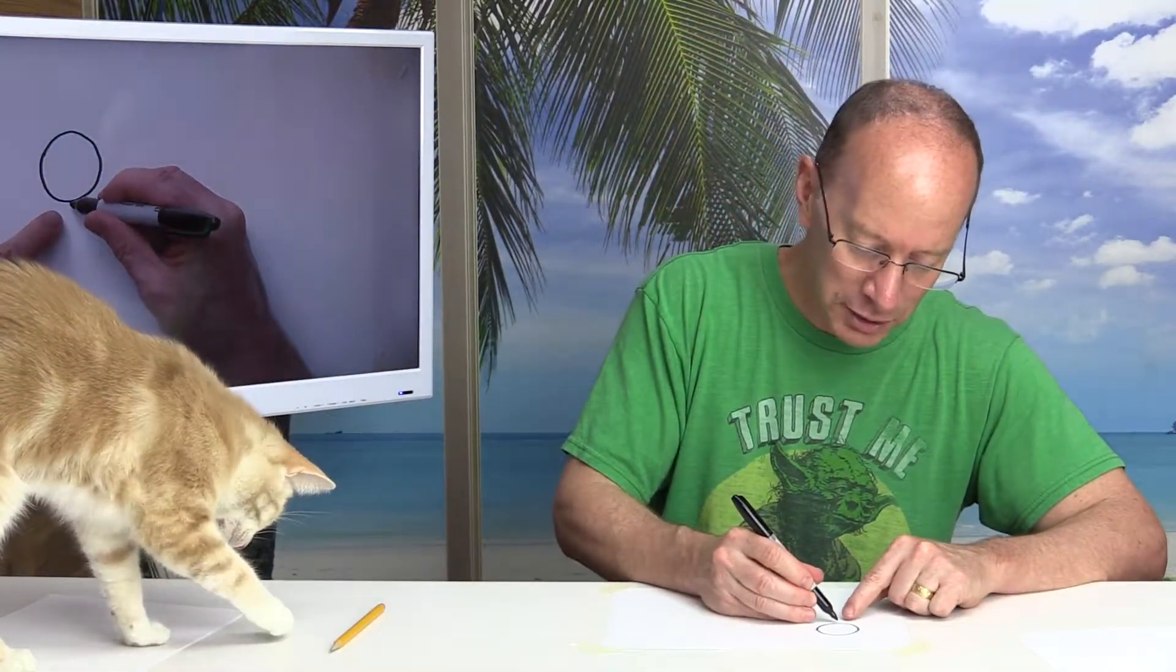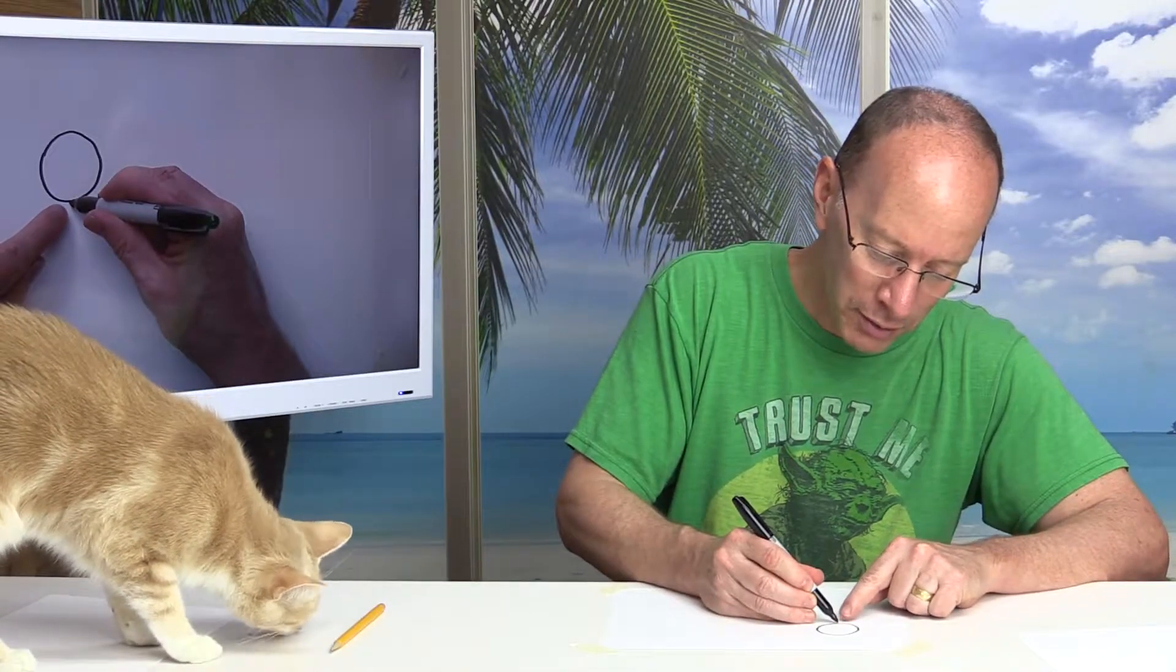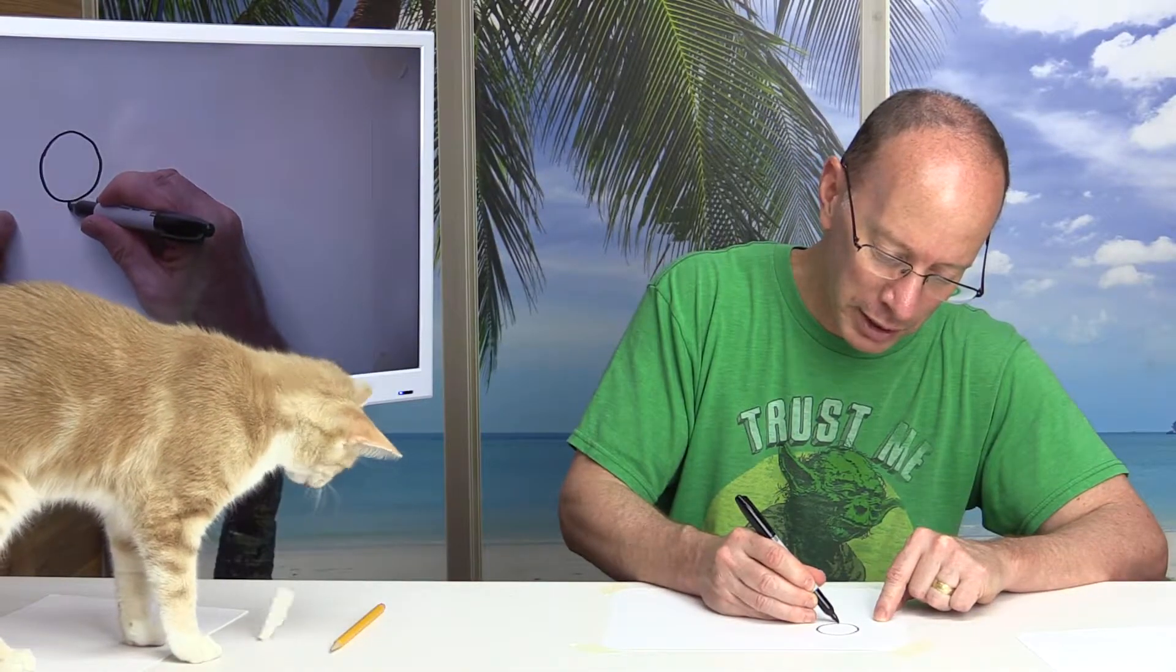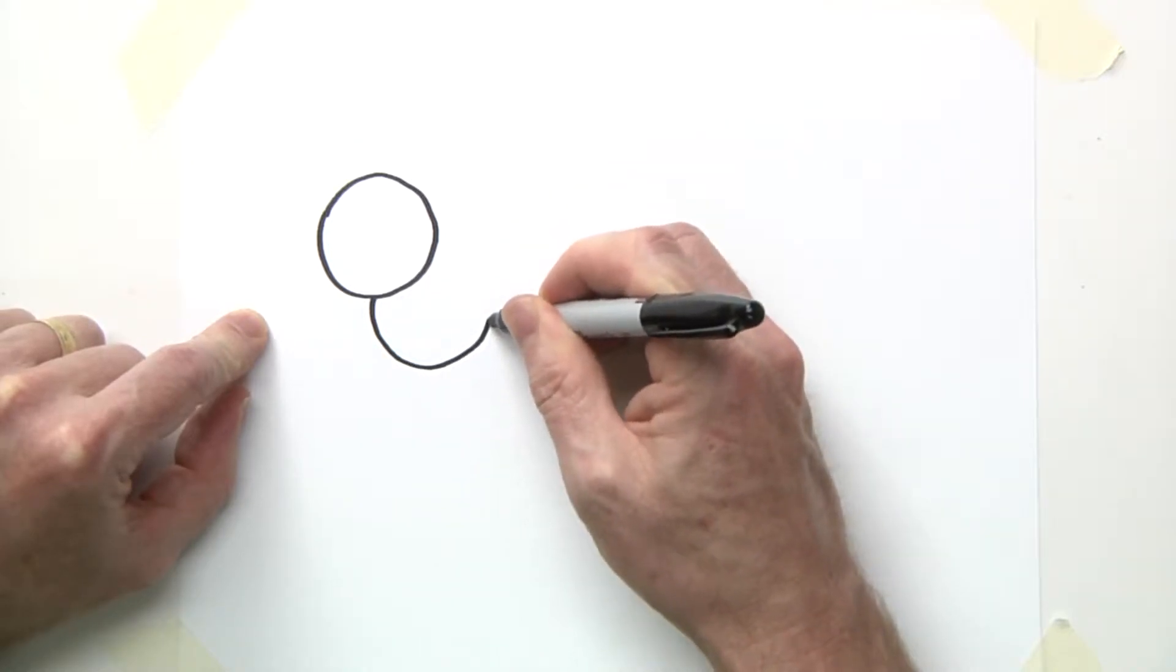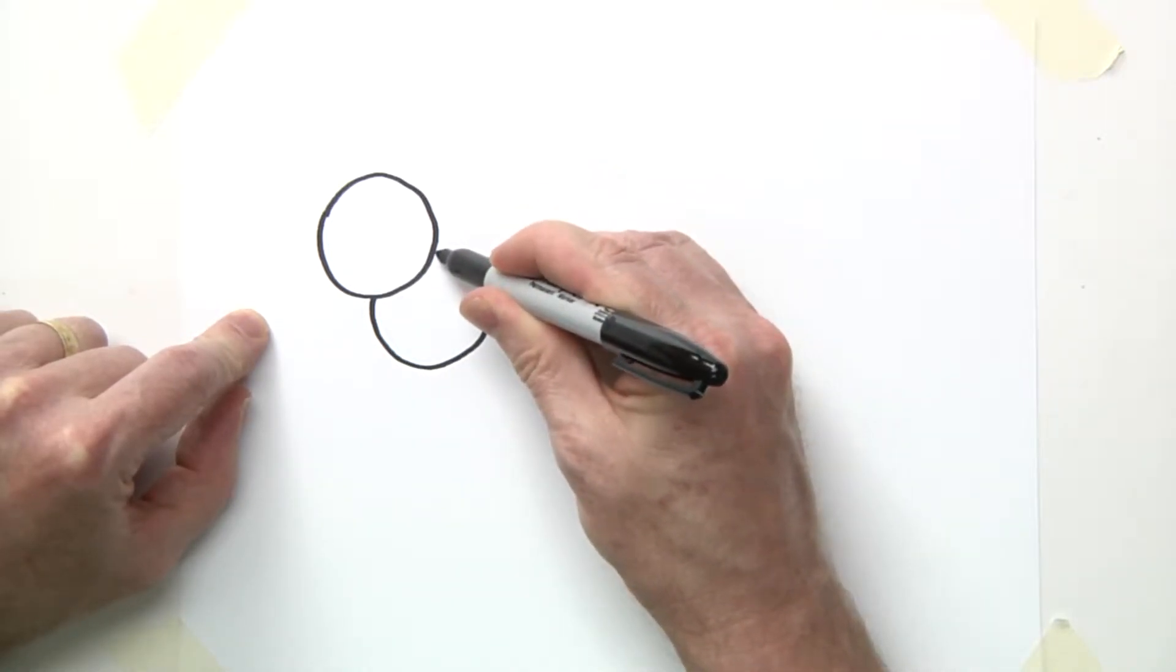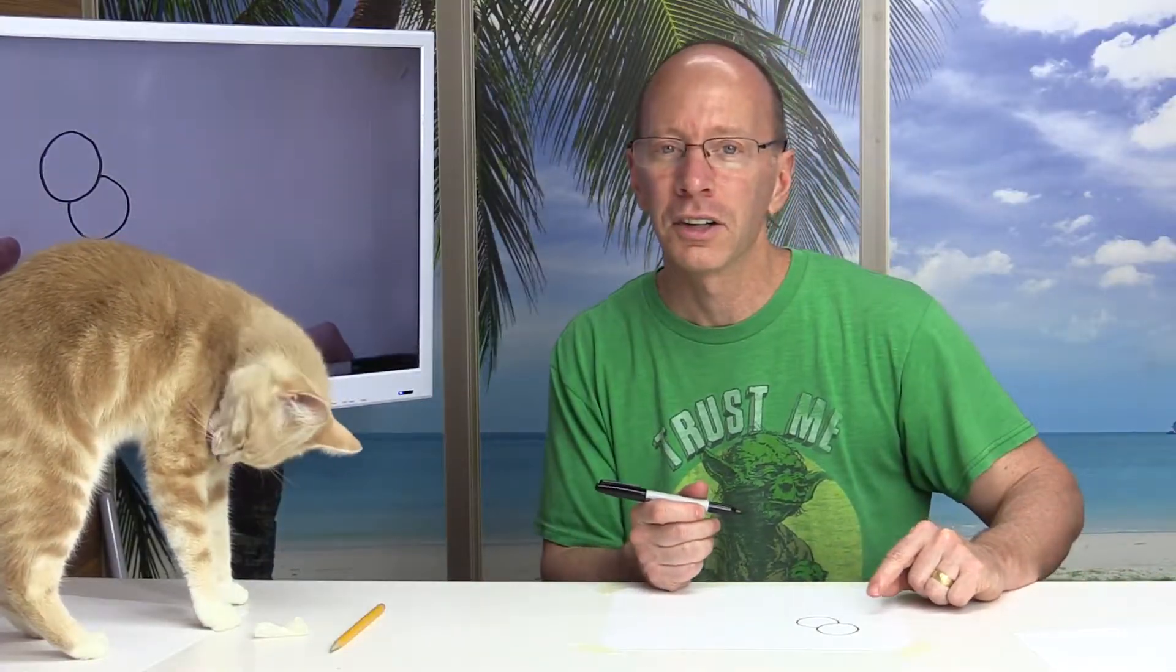Now we're going to draw another circle, but we're going to kind of start right about here. This could be another circle and it's starting to come down and it kind of goes into the other circle like that.